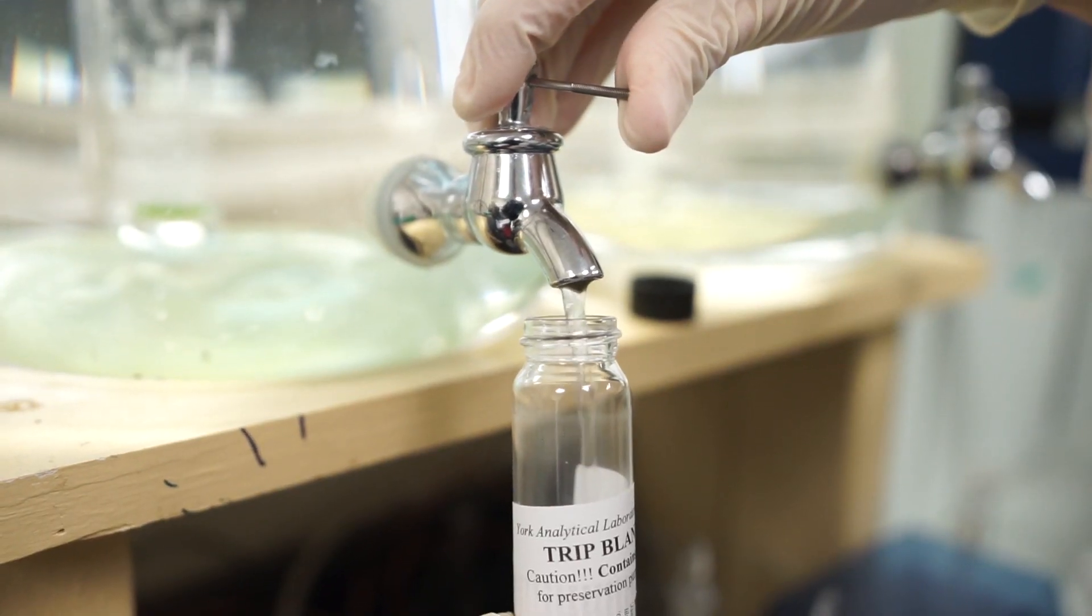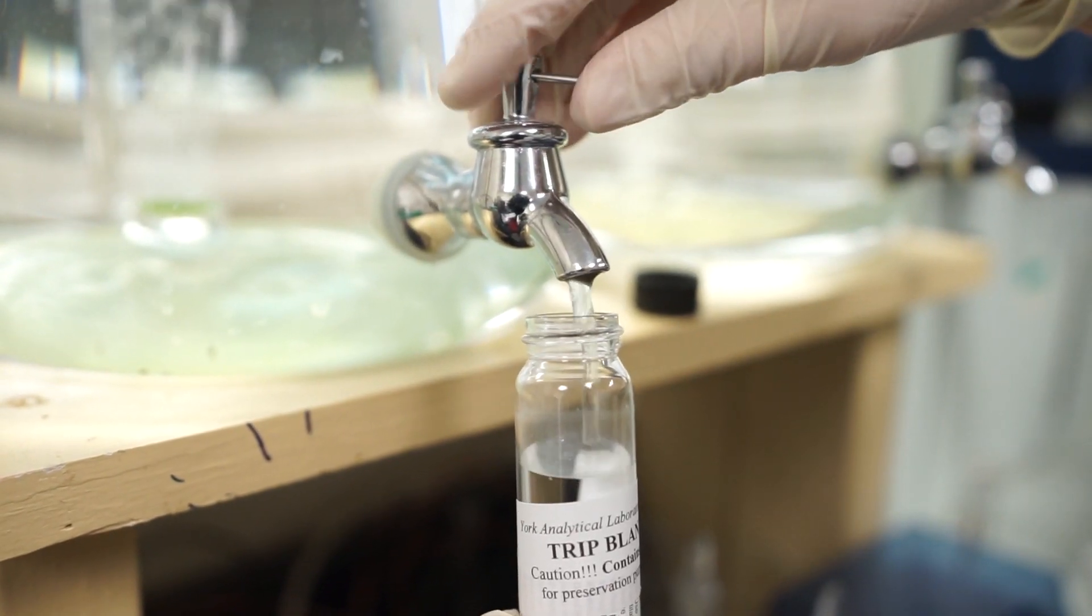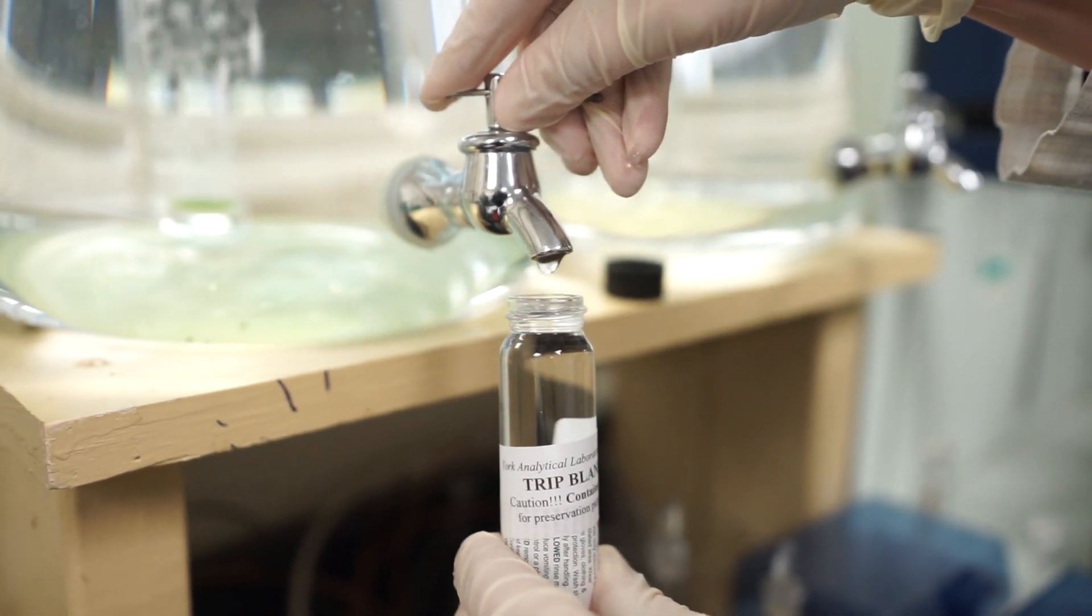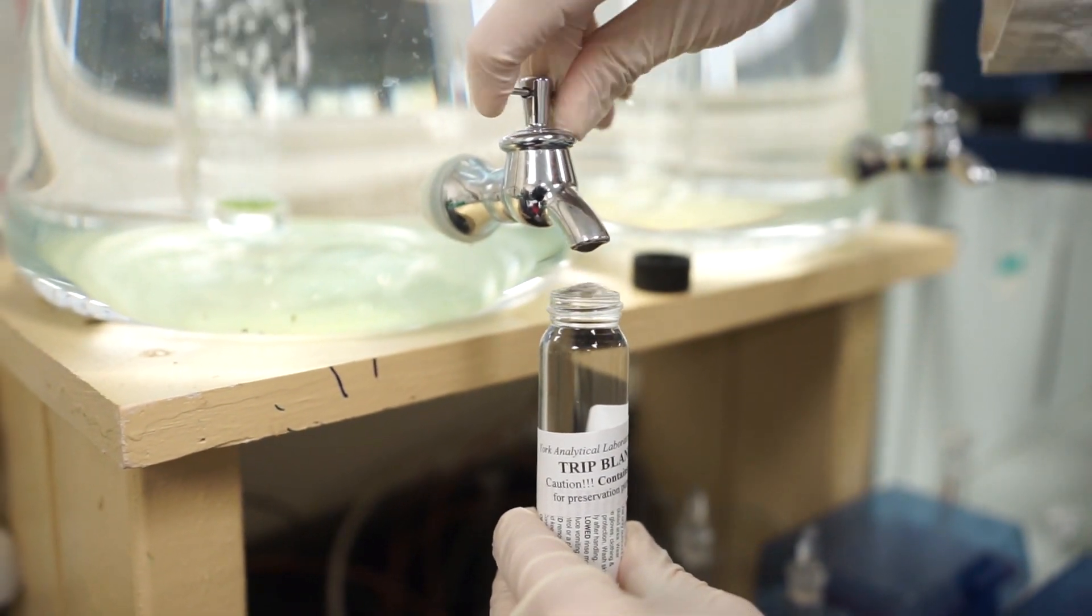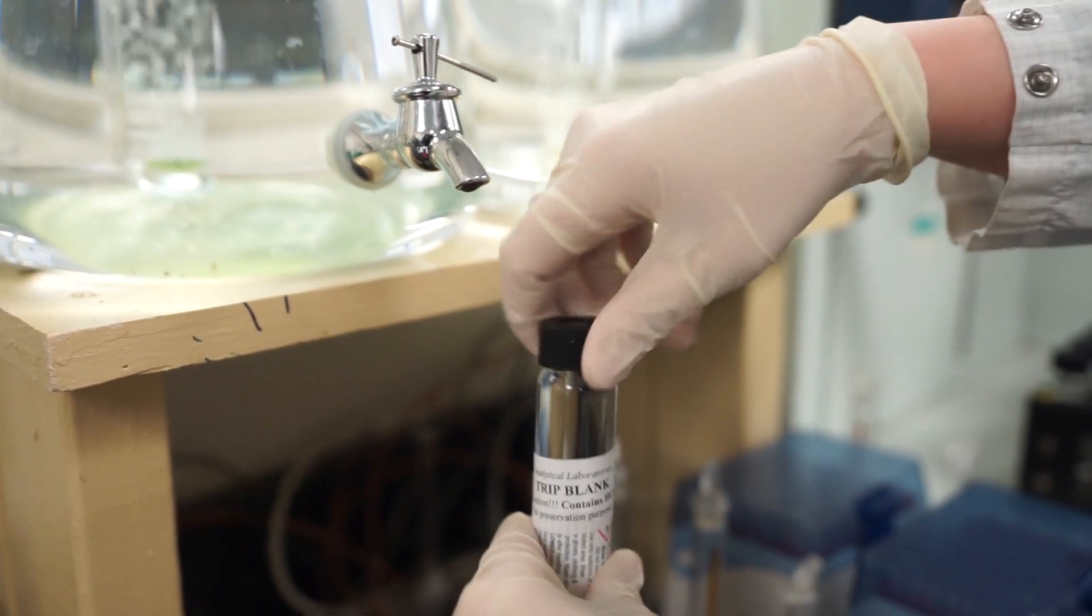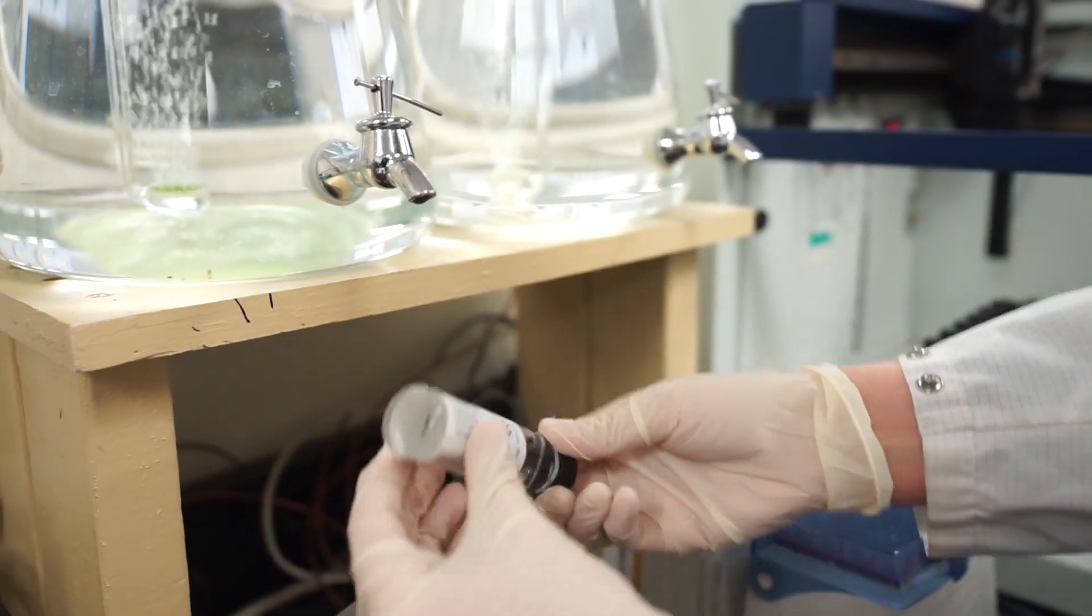The volatile vials take from being prepped in the lab, traveling with the bottle order to the field for sample collection, and then back to the lab for analysis. With the trip blank, we can compare the results from that analysis.